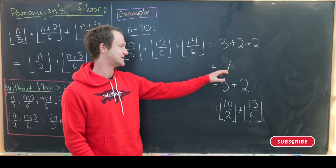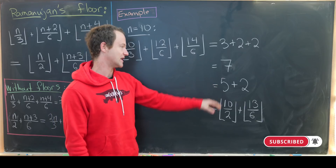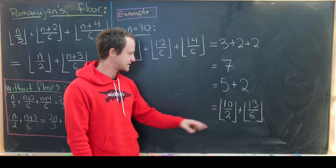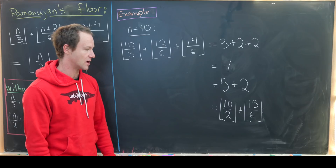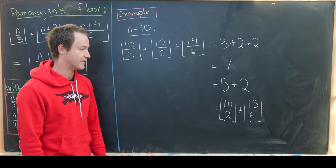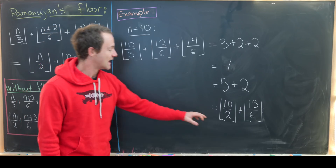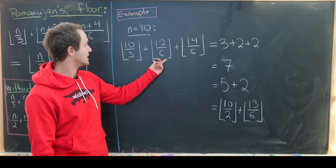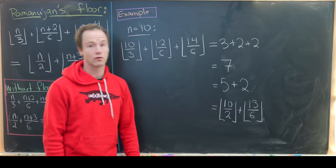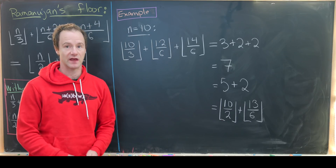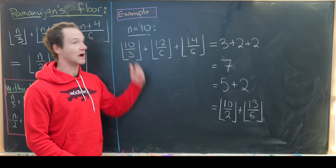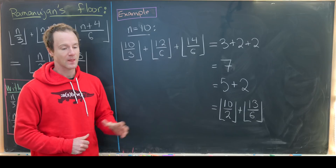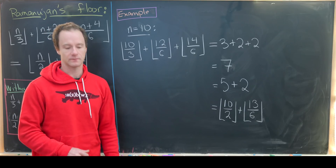14/6 is between 2 and 3, so when we take the floor we get 2. Clearly 3 + 2 + 2 = 7, which we can re-expand as 5 + 2. Notice that 5 + 2 is the same as the floor of 10/2 plus the floor of 13/6. That's the right-hand side of our identity with n = 10, so we've shown the identity holds for n = 10.